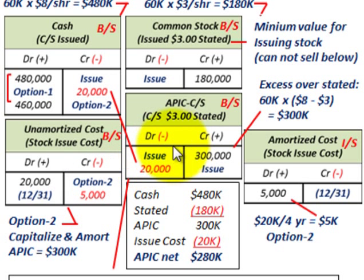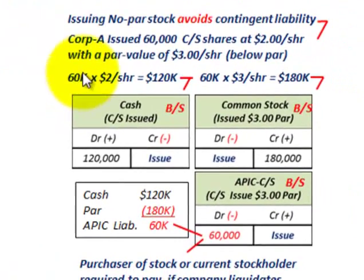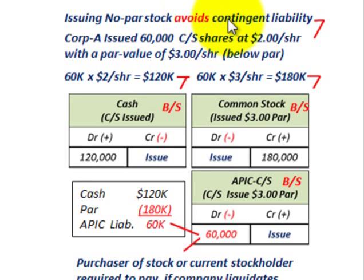So we've covered the case where no par stock is issued with a stated value. With a stated value, you set up your common stock on the balance sheet at the stated amount, and any excess over that stated amount goes into additional paid-in capital. Now let's look at contingent liabilities — one feature of issuing no par stock is that it avoids any contingent liability.